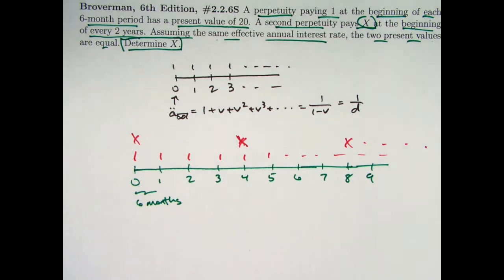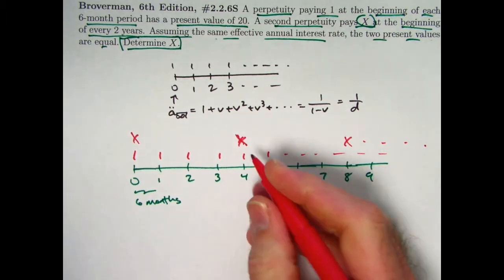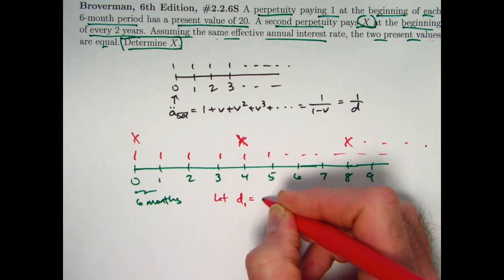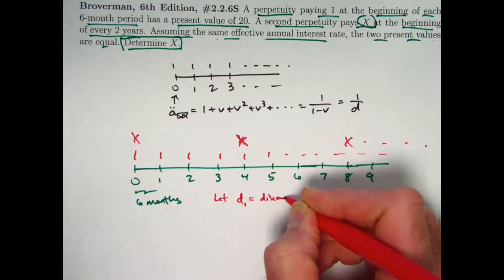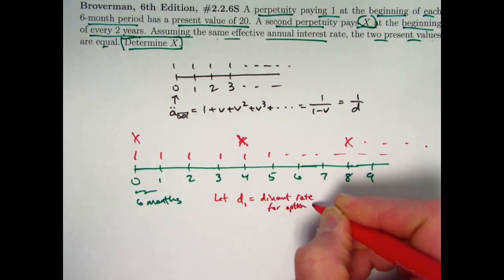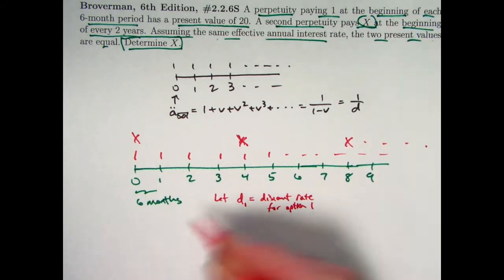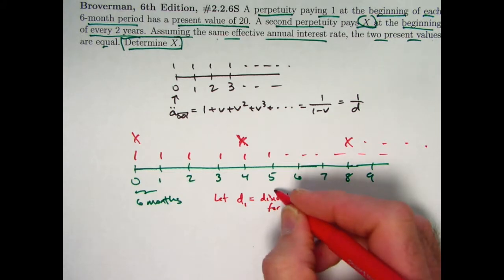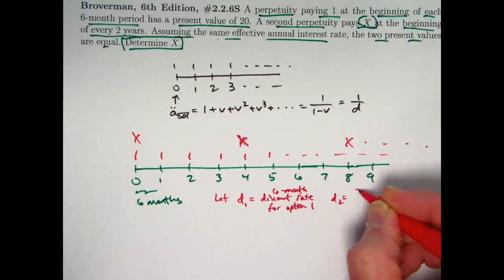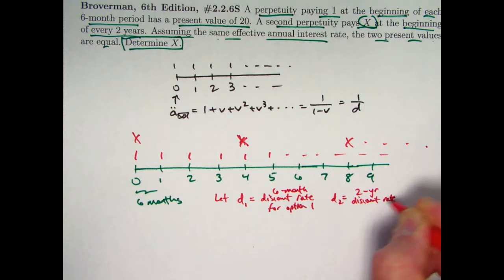All right, that's the setup. What are some equations we can write down? Before we write down equations, let's make a couple definitions. Let's say let d1 be the present value discount rate for option one. The payments of one beginning right away going every six months, so that's a six-month discount rate I should say. And d2 is going to be a two-year discount rate for option two.